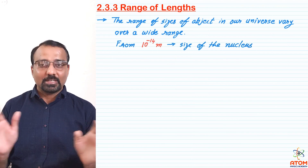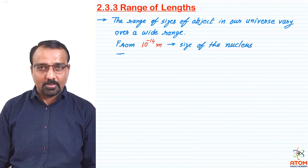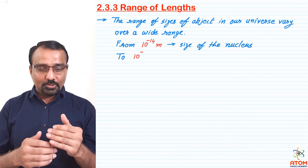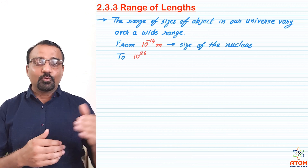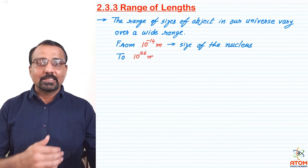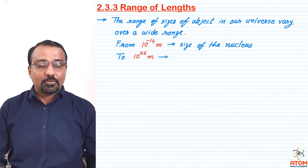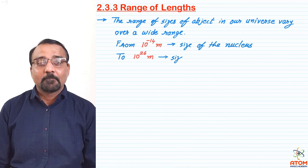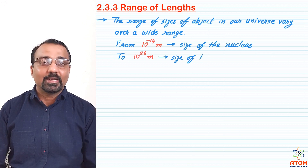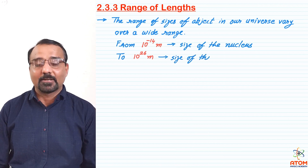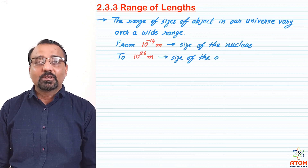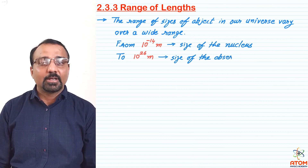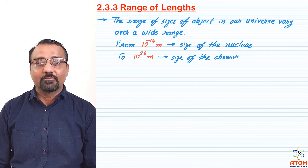Mind well, we have not yet observed the whole universe. The universe up to which we can see till now, or from where we can get light, is just up to 10 raise to 26 meter. So this is the wide range of measurement we do in physics.